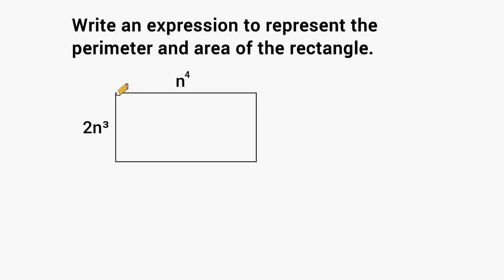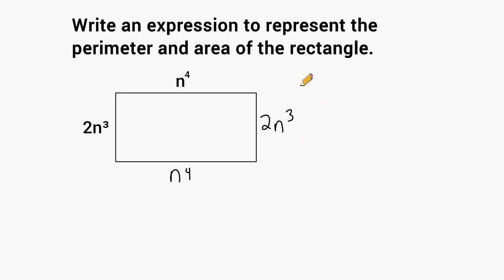This width right here is n to the fourth, and since opposite sides of rectangles are equal in length, the opposite side is also n to the fourth. This edge of the rectangle is 2n to the third power, so the opposite side is also 2n to the third power. To find the perimeter of any rectangle, we add all four sides: 2n to the third, plus 2n to the third, plus n to the fourth, plus n to the fourth.